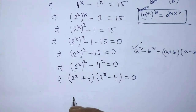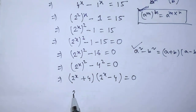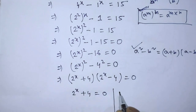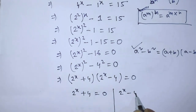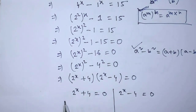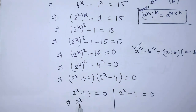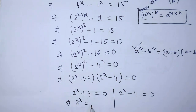According to the zero product rule, we can write from this equation: 2 to the power x plus 4 is equal to 0, and 2 to the power x minus 4 is equal to 0. To find the value of x from the first equation, we transpose 4 from the left hand side to the right hand side.